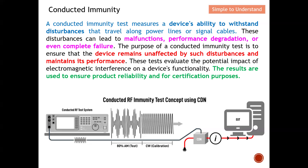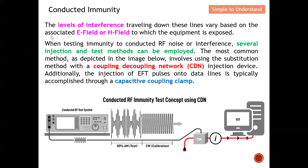The level of interference that travels down these lines actually varies based on the associated E-field or H-field to which the equipment is exposed — for example, interference can be 3 volts per meter or 10 volts per meter, depending on the different test standards. Basically you control your noise source, deliver it to the EUT, and determine whether the EUT can still function as per nominal.